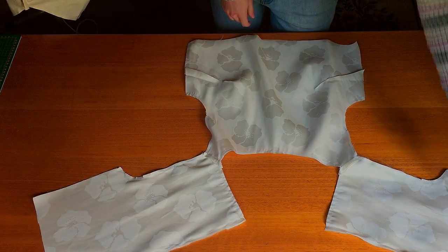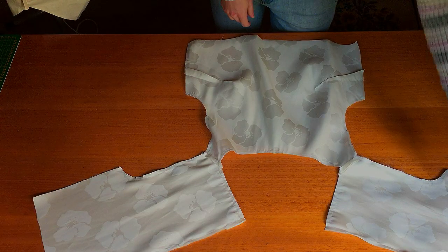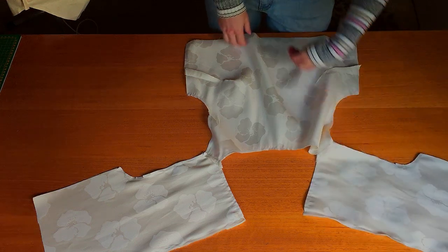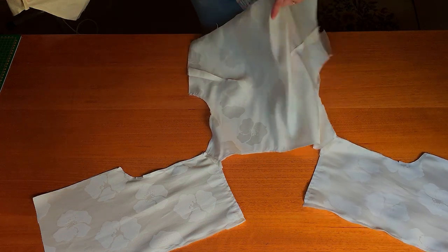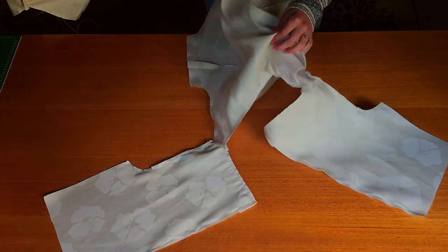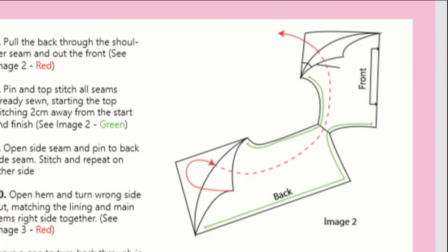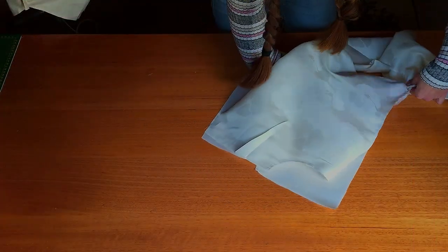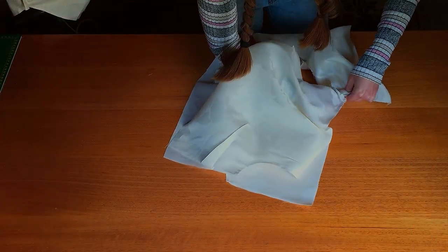This is where the process gets a little fiddly. You're going to take the back through the shoulder seam and out the front. Start by splitting the fronts and reaching to the shoulder seam. Then take the corner of the back with your other hand and reach it to the shoulder seam. Here is a diagram from the downloadable notes to make it clearer what to do. As you can see it's a little fiddly but once you've done it once it's much easier.